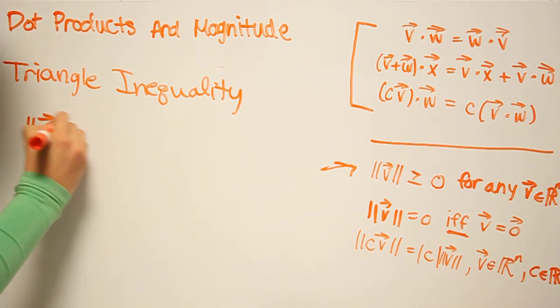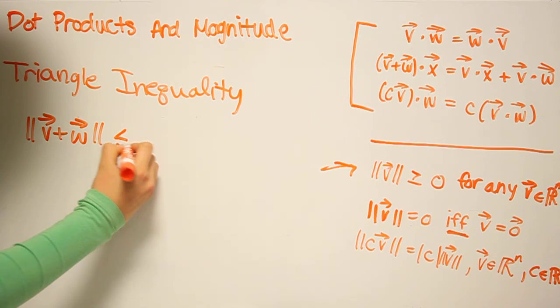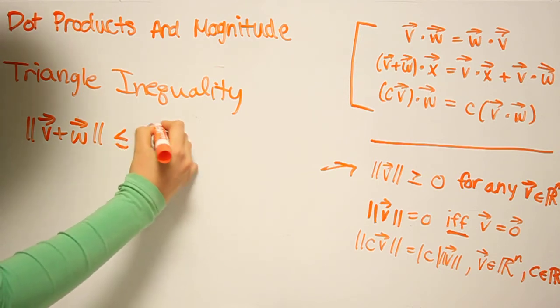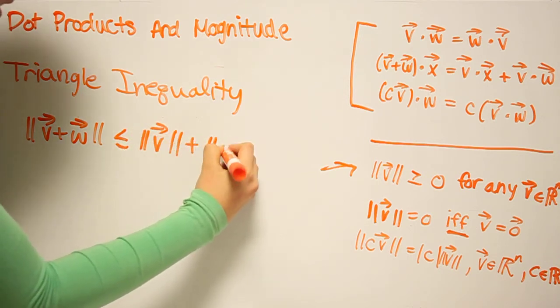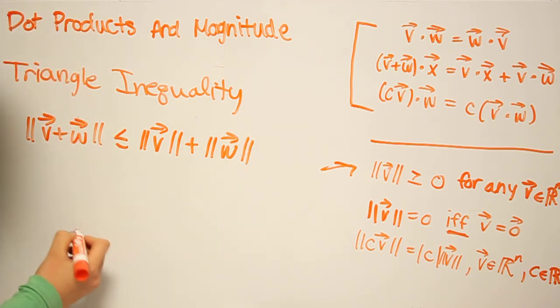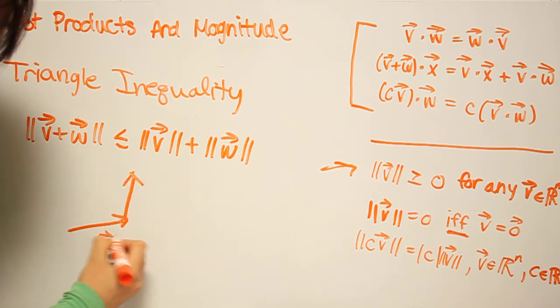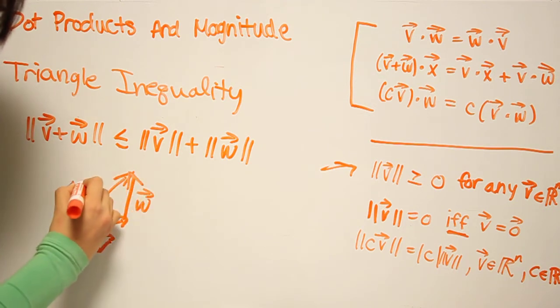So if we have two vectors V and W, we take the magnitudes of that, that is going to be less than or equal to the magnitude of V plus the magnitude of the vector W. So geometrically, say we have this is V, this is W, and recall from vector addition, this would be V plus W.